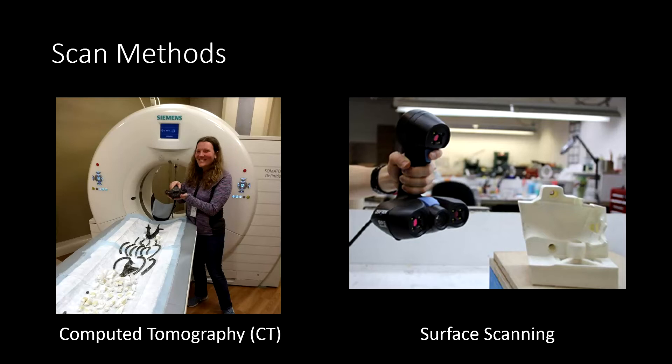Computed tomography you may be familiar with from medical CT scanners, like the one you can see in the image on the left. Surface scanning, on the other hand, captures just the external morphology of an object.